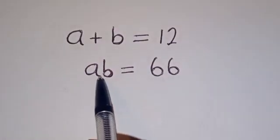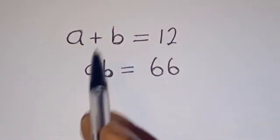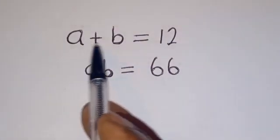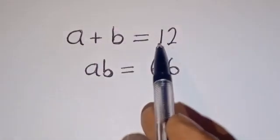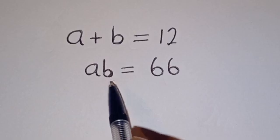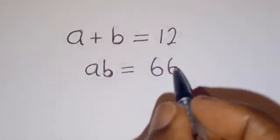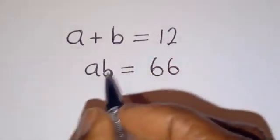Hello. How to solve for A and B in this equation. A plus B is equal to 12. A B is equal to 66.